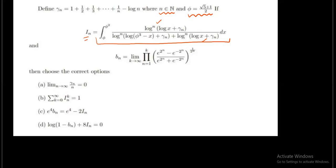Bₙ is also defined as the limit k tends to infinity of the product from n=1 to k of (e^(2ⁿ) − e^(−2ⁿ)) raised to the power 1/2ⁿ. Then choose the correct options. We are going to choose the correct options only after getting the values of Iₙ and Bₙ. So first of all we are going to concentrate on these two questions.